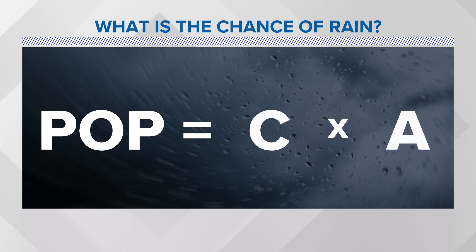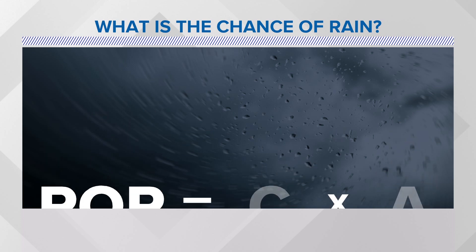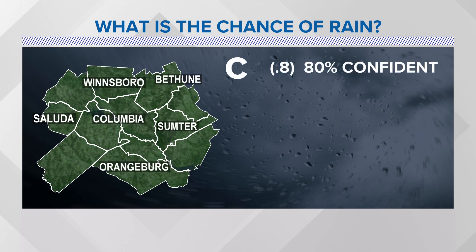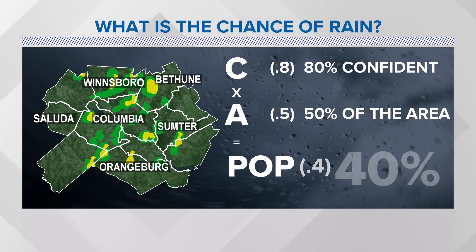There's an equation that we use to get this percentage. A POP is equal to the confidence in a forecast multiplied by the area that will get rain. For example, let's take the News 19 forecast area. If I am 80% confident that 50% of the area will see rain, that would be a POP of 40%, or a 40% chance of rain.